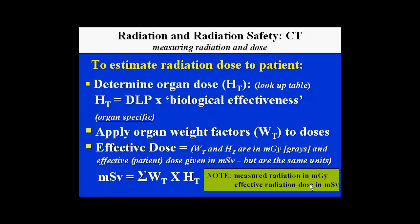To estimate radiation dose, we determine organ dose from a lookup table. This is defined as the dose length product times the biological effectiveness parameter shown on the previous slide. We apply organ weighting factors to the doses, and the effective dose becomes a combination of these parameters. The units change from milligrays to millisieverts — even though they are the same unit size. Measured radiation is in milligrays; effective radiation dose is in millisieverts.